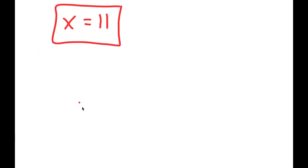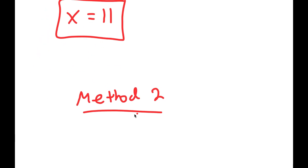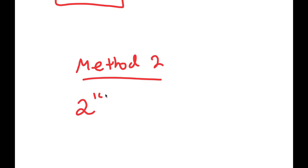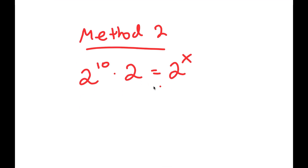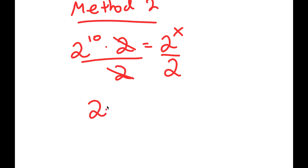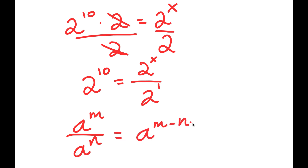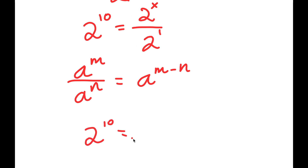For method 2, solving from the step where I have 2 to the power of 10 times 2 is equal to 2 to the power of x — instead of multiplying, I'm going to divide by 2 on both sides. These two cancel out, and I get 2 to the power of 10 is equal to 2 to the power of x over 2. Now, 2 is the same thing as 2 to the power of 1, and a to the power of m over a to the power of n equals a to the power of m minus n. So 2 to the power of x over 2 to the power of 1 equals 2 to the power of x minus 1.